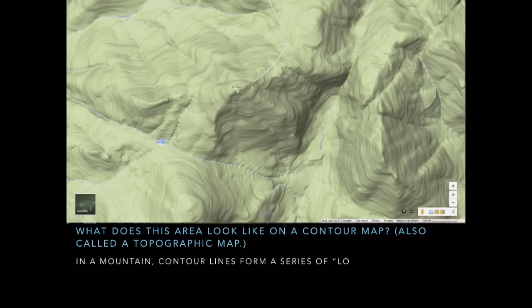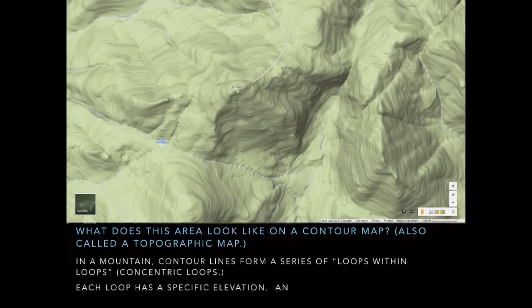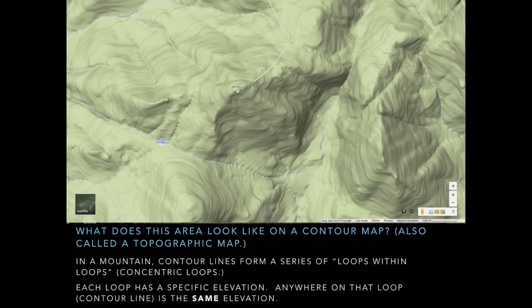In a mountain, contour lines are going to form a series of loops within loops — concentric loops. Concentric loops mean that you have a small loop in the middle, and as you go outward from the middle, they get bigger and bigger. That is the pattern for a mountain. Every single loop or line has a specific elevation. These are iso lines — iso meaning the same — so everywhere on that loop or line is the same elevation.